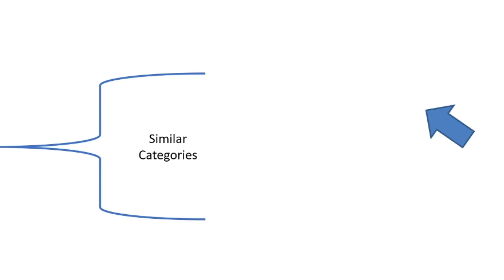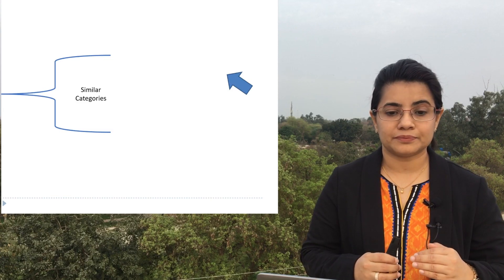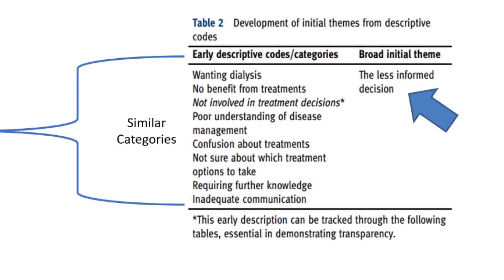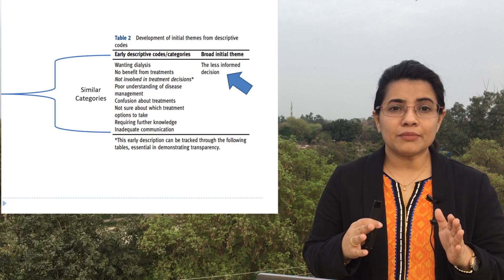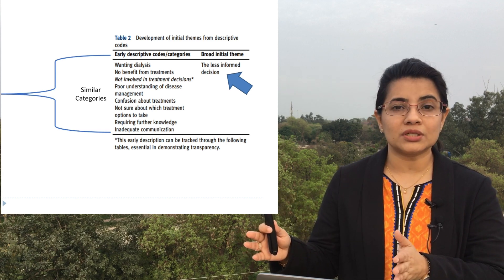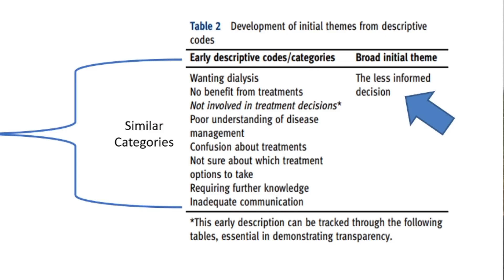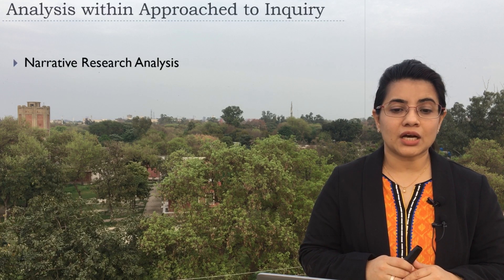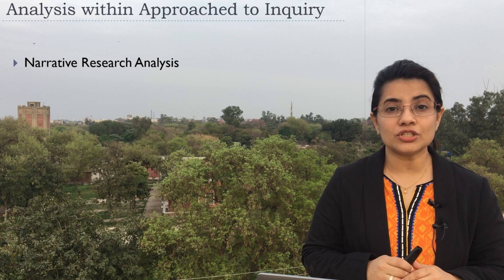In the next slide you can see how we gathered all similar categories together. On one side are the initial codes, and on the other side we emerge with a final broader theme — for example, 'less informed decision.' You may have initial coding, then a second level of coding, and then arrive at the final theme. It all depends on the amount of data you have. There are different types of qualitative data analysis: narrative research analysis, phenomenological analysis, grounded theory analysis, ethnographic analysis, and case study analysis.